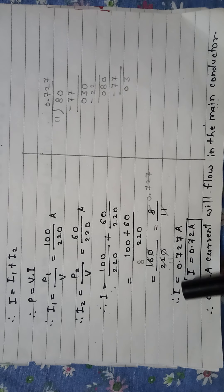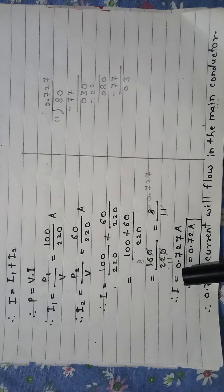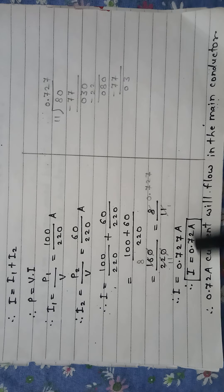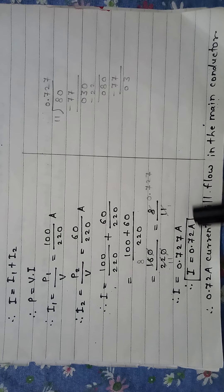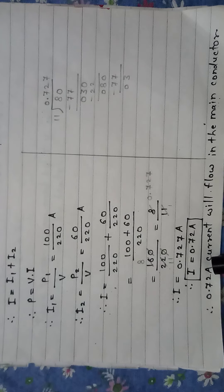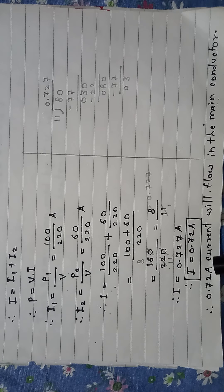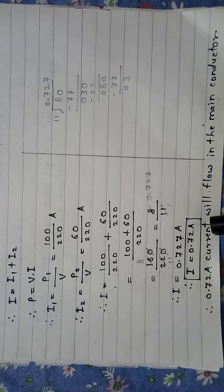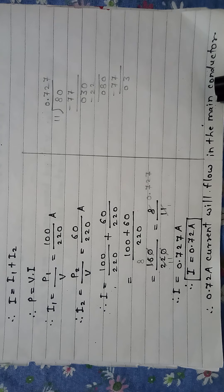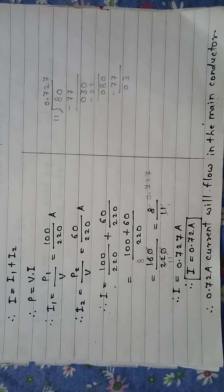Therefore I is equal to 0.727 Ampere, approximately 0.72 Ampere. Therefore 0.72 Ampere of current will flow in the main conductor.